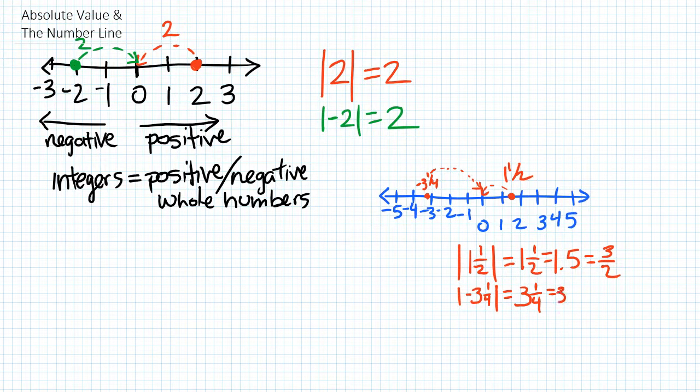Again, we could represent that as 3.25 or 3 and 25 hundredths, or we could represent it as 13 fourths, which is just the improper fraction form of it.